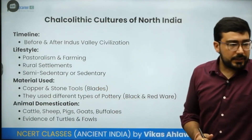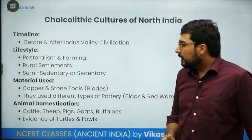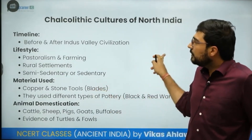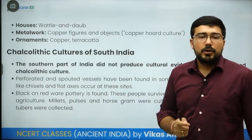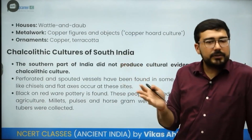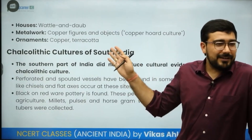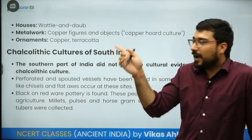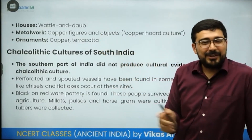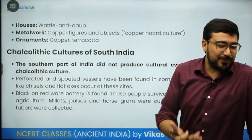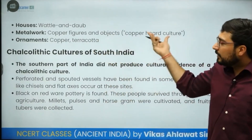For animal domestication, evidence of cattle, sheep, pigs, goats, and buffaloes has been found, along with evidence of turtles and fowl from some sites. For housing, these cultures built wattle and daub houses — 'wattle and daub' is a fancy term for mud houses. This is something to remember when comparing Neolithic and Chalcolithic housing types.